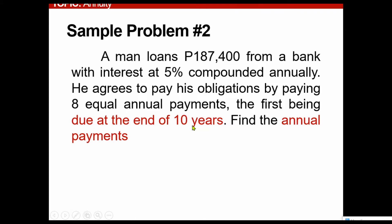So that means that we will not start at the first year. Instead, we will start at 10 years, meaning we will start at a later time. So therefore, we will be using annuity due.